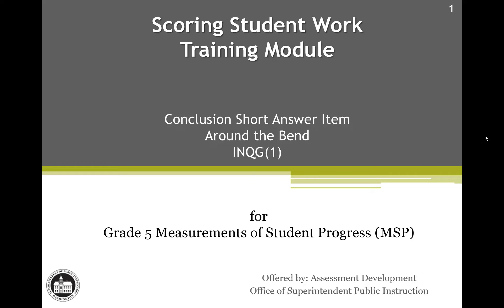Welcome to Scoring Student Work for the Grade 5 Science Measurements of Student Progress. The focus of this video is to provide guidance for scoring student short answer responses using rubrics. We will review one scenario, an associated item, and several student responses to that item.